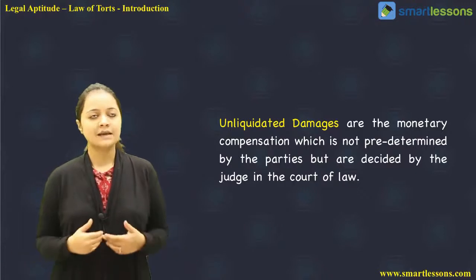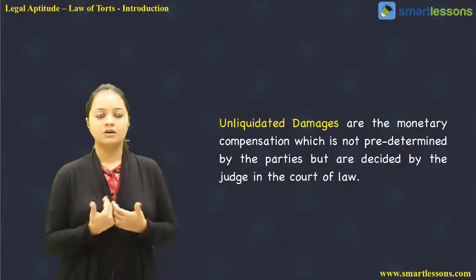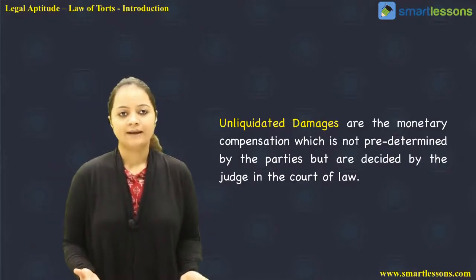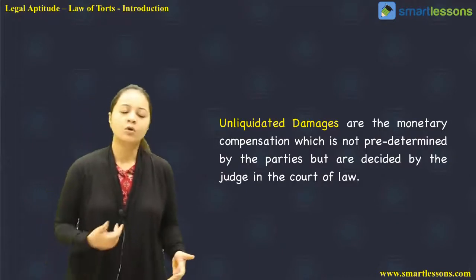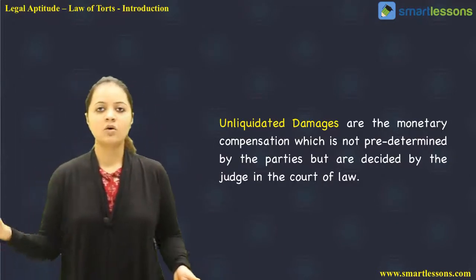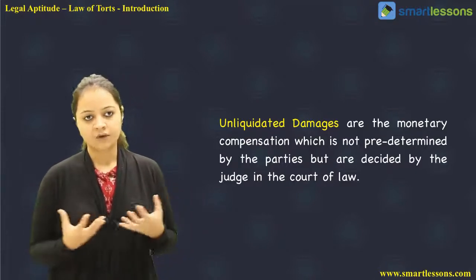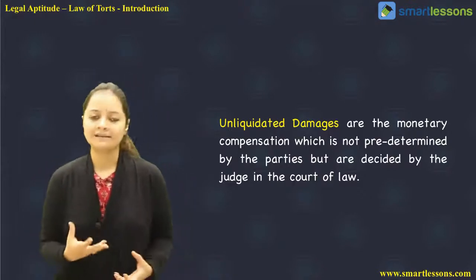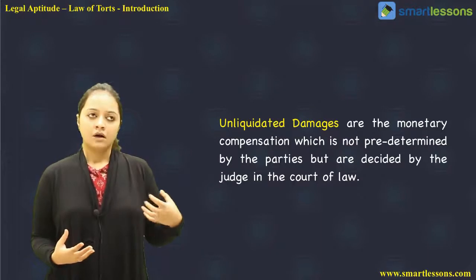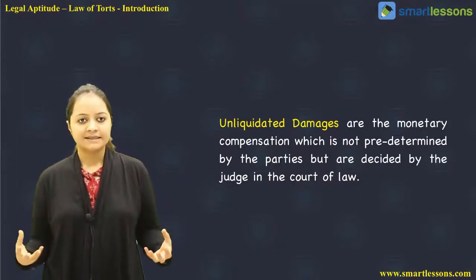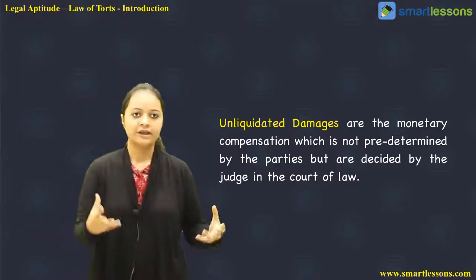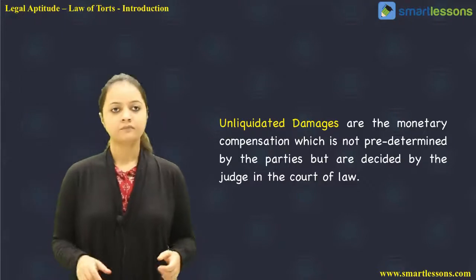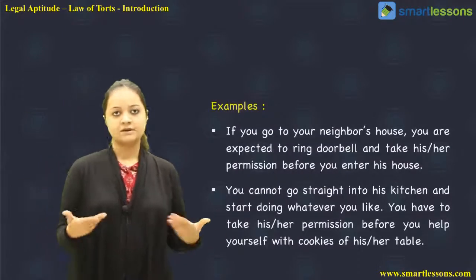In the case of unliquidated damages, nobody knows what wrong will take place or when it will occur. So the damage is not predetermined by the parties but is decided by the judge in the court of law. The judge will assess the whole situation, ascertain what kind of wrong has taken place, and decide what compensation or damages have to be awarded.